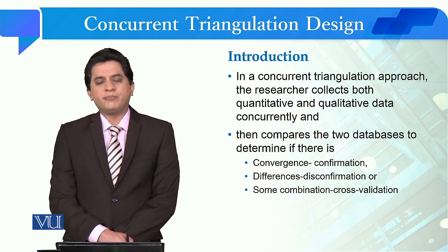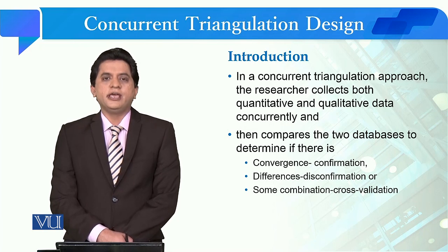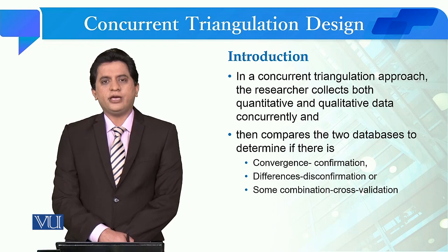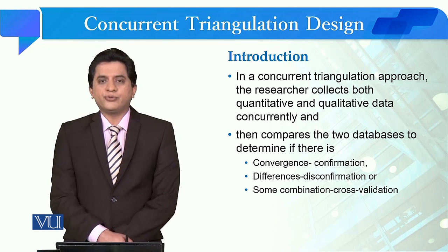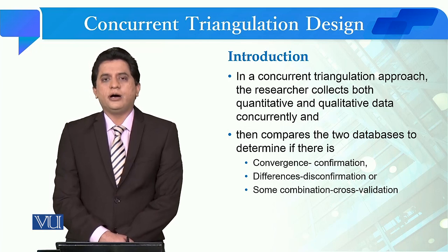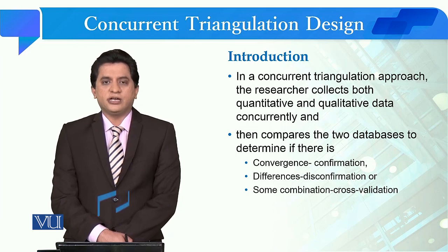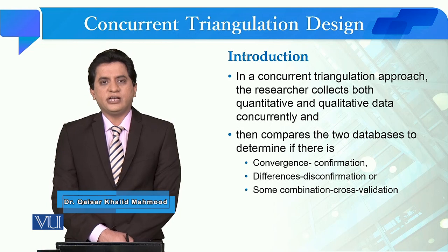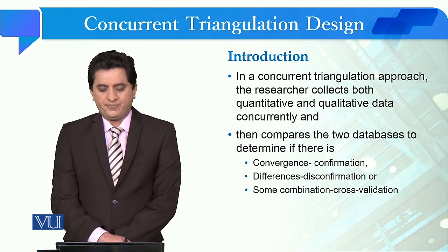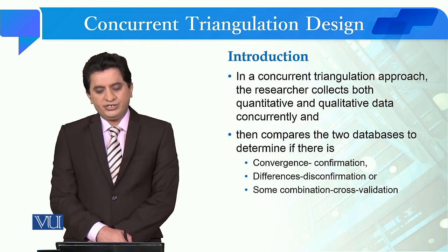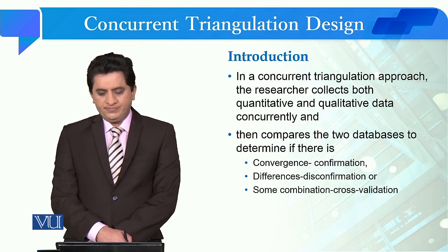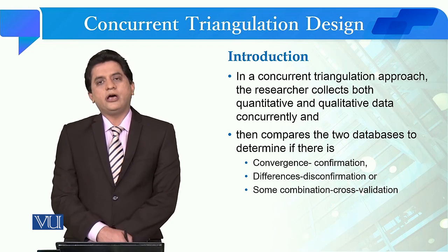The researcher conducts both quantitative and qualitative studies at the same time — one collects quantitative data and the other collects qualitative data. We then compare the databases to determine if there is a convergence or confirmation, differences or disconfirmation, or some combination or cross validation.